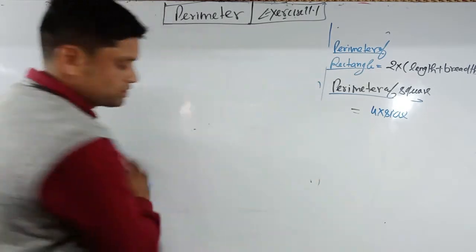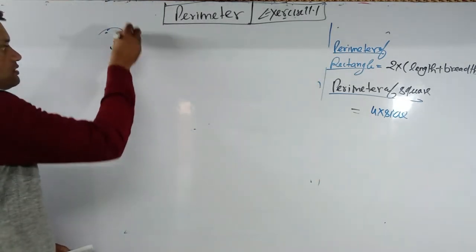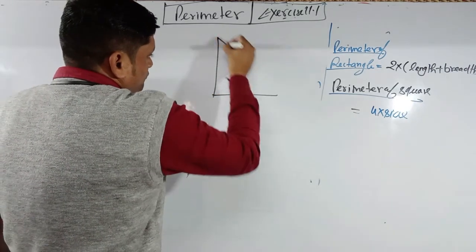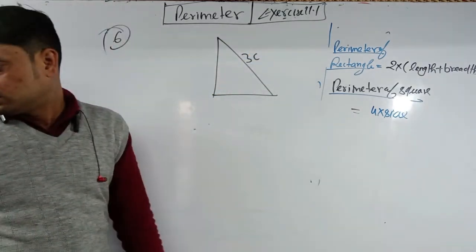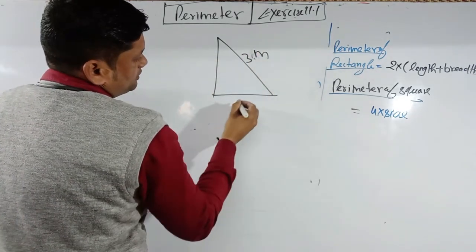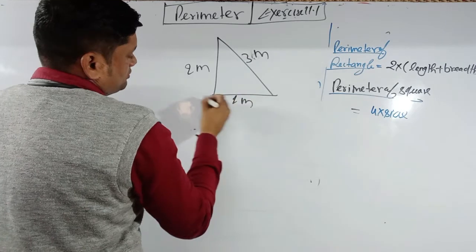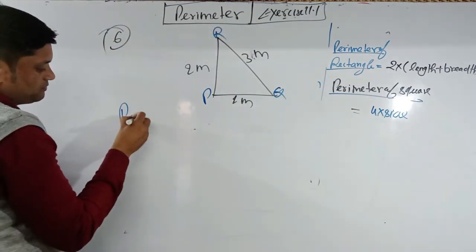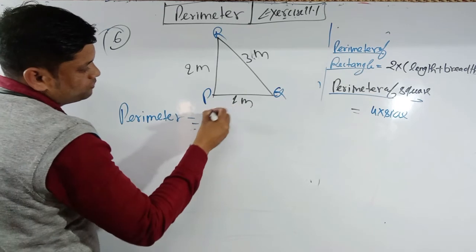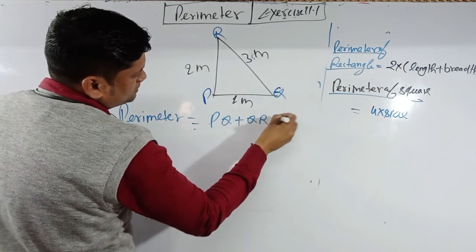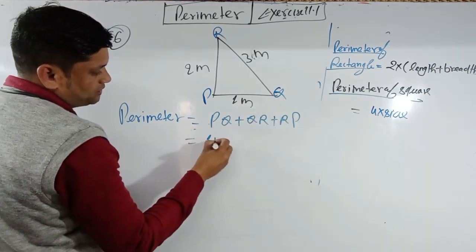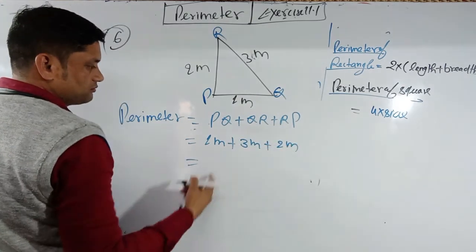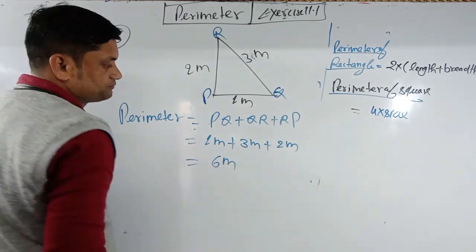Question 6: find the perimeter of a triangular park with sides 1 m, 3 m, and 2 m. Give the triangle name PQR. Perimeter = PQ + QR + RP = 1 + 3 + 2 = 6 meters. Easy!